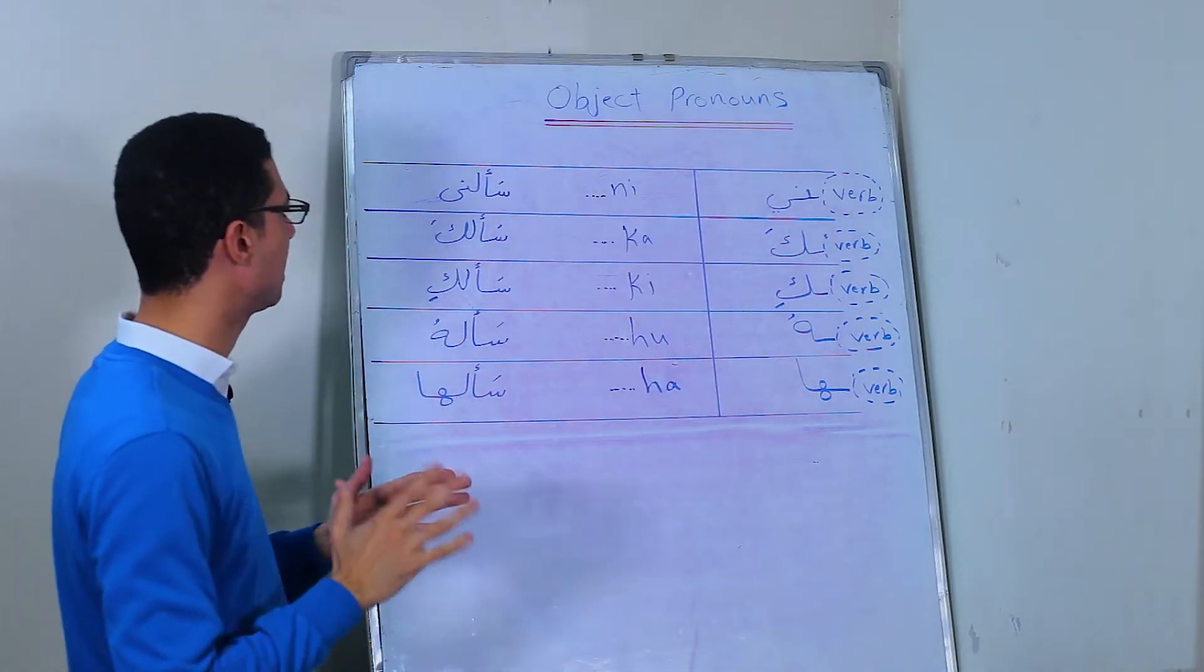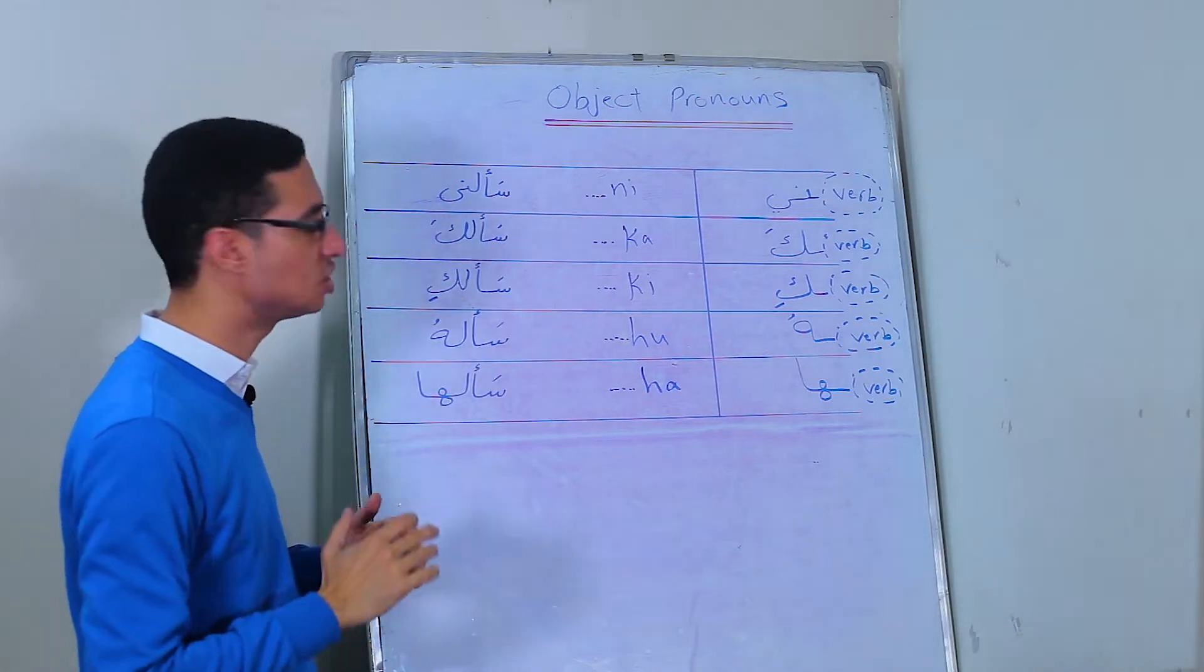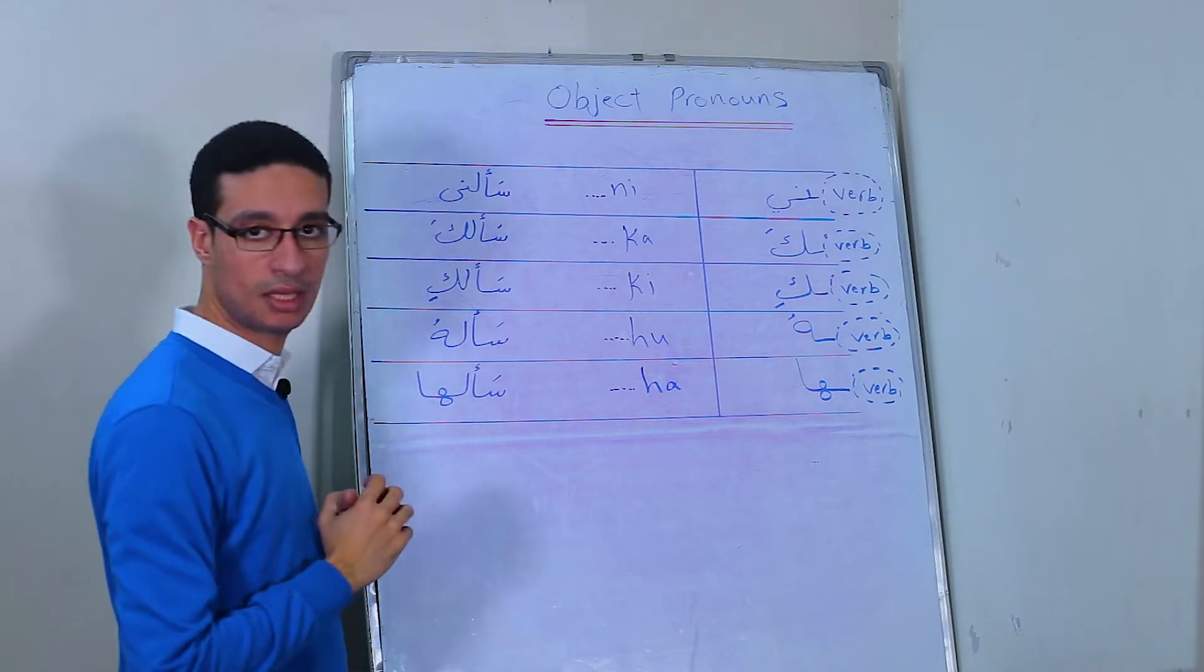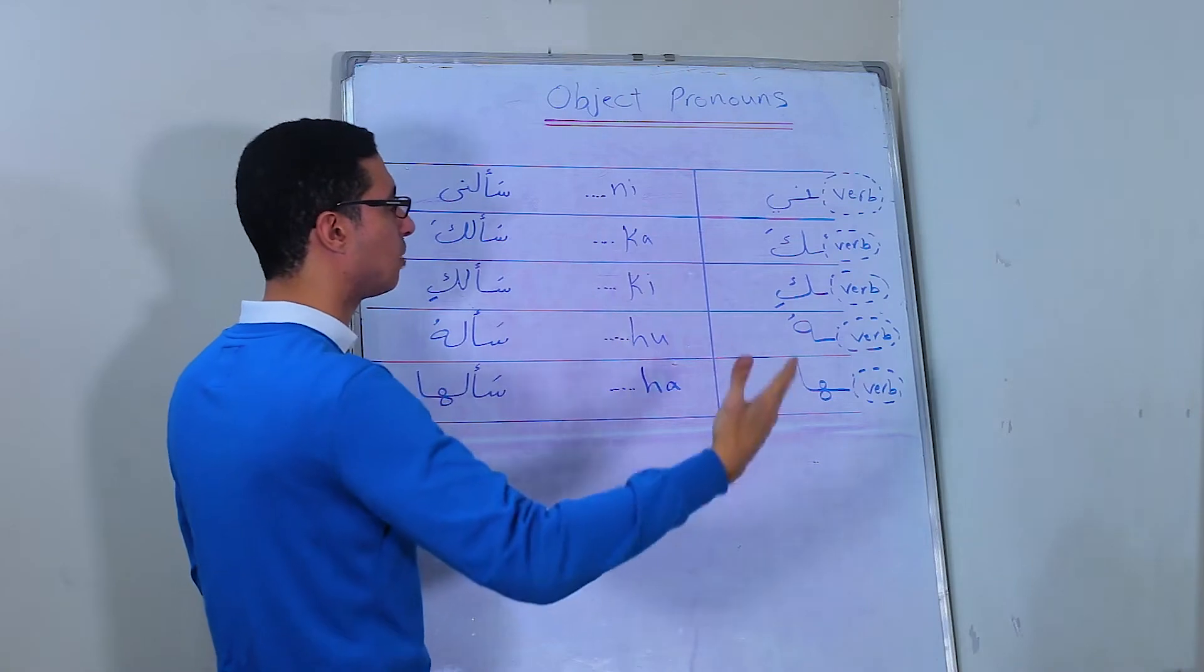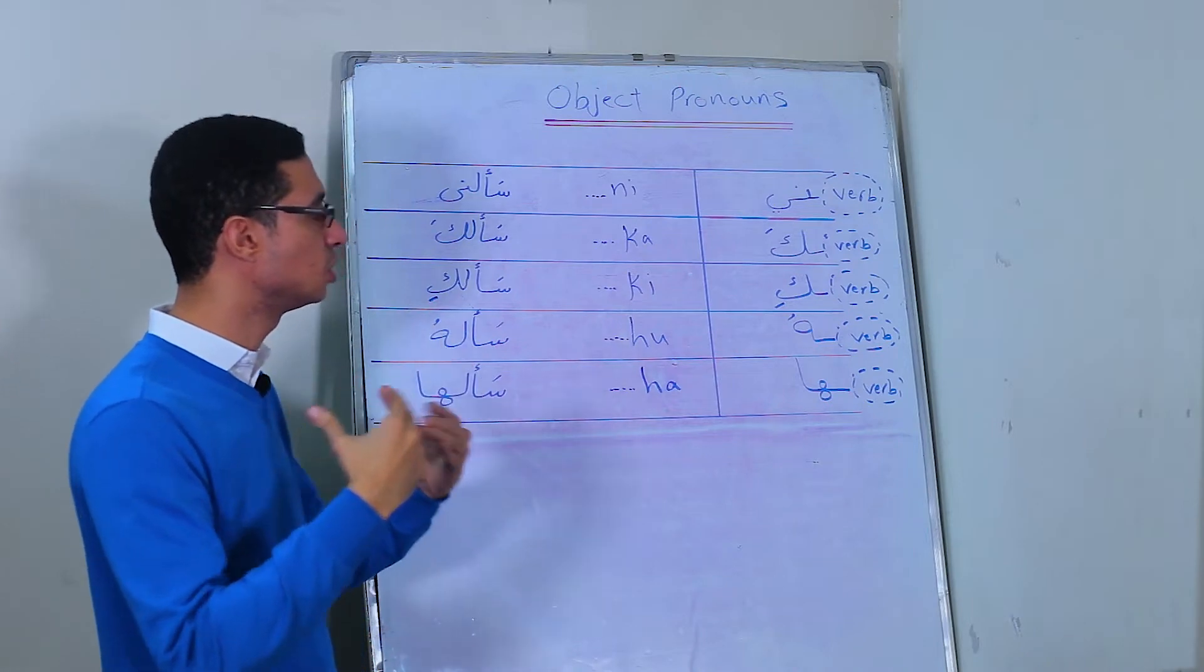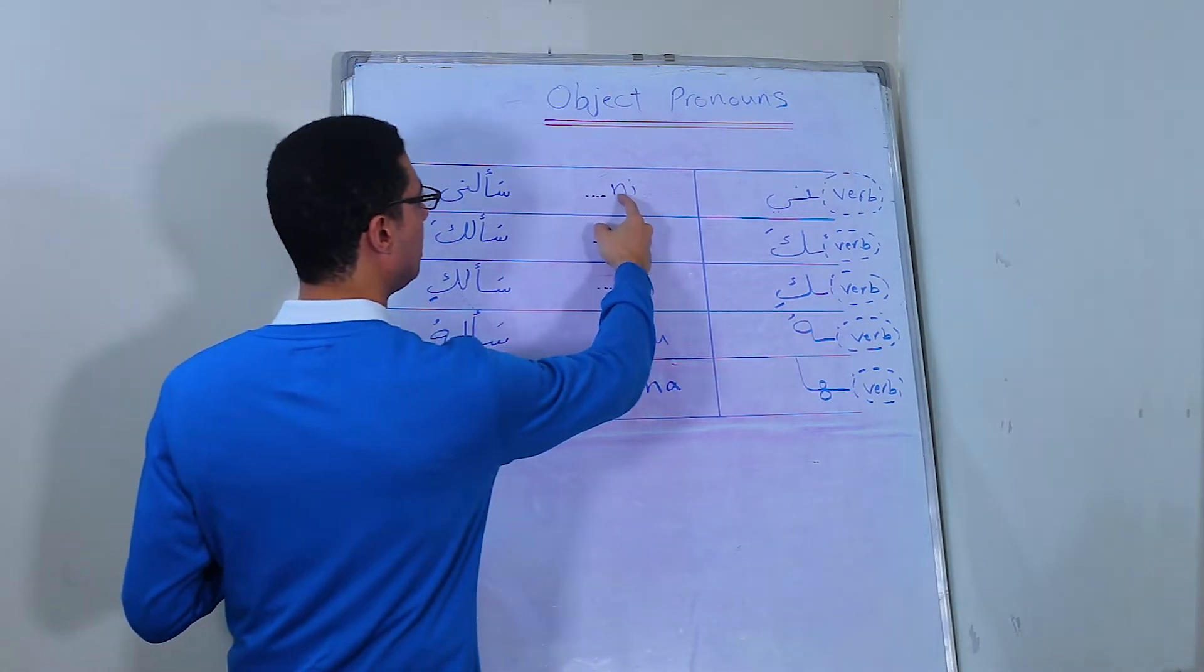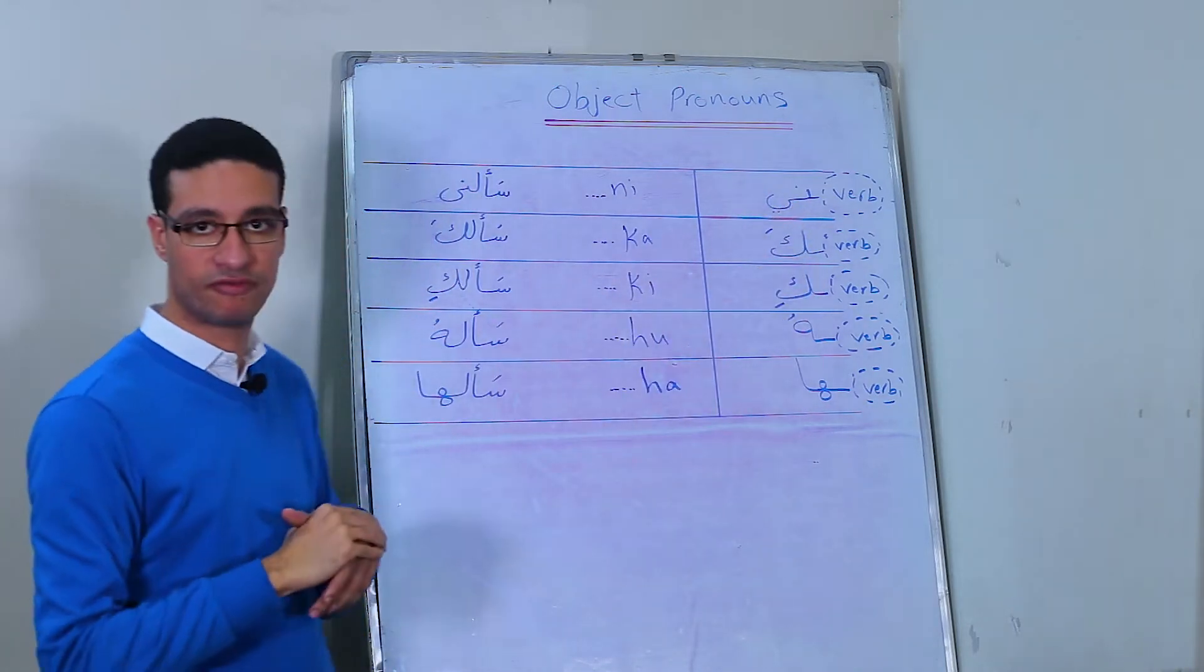So let's start with an example. Here we use the verb سأل, which means to ask. He asked. So سألني means he asked me. So if you're talking about yourself, someone asked you or someone asks you or someone does something to you, so you're not the subject. We will add نون and ياء to the end of the verb.